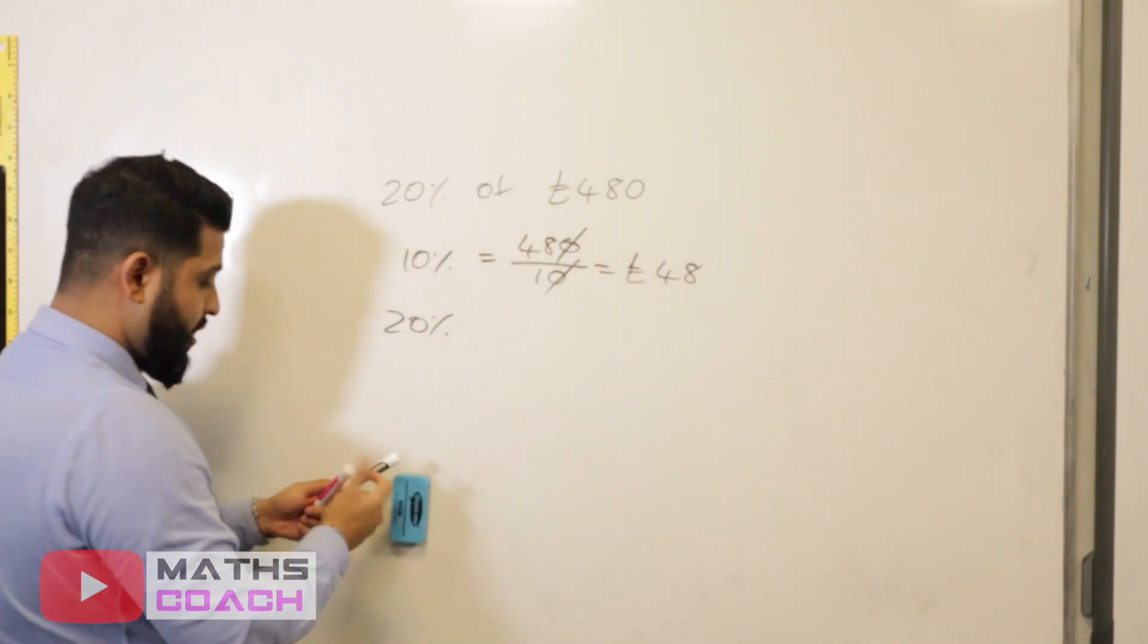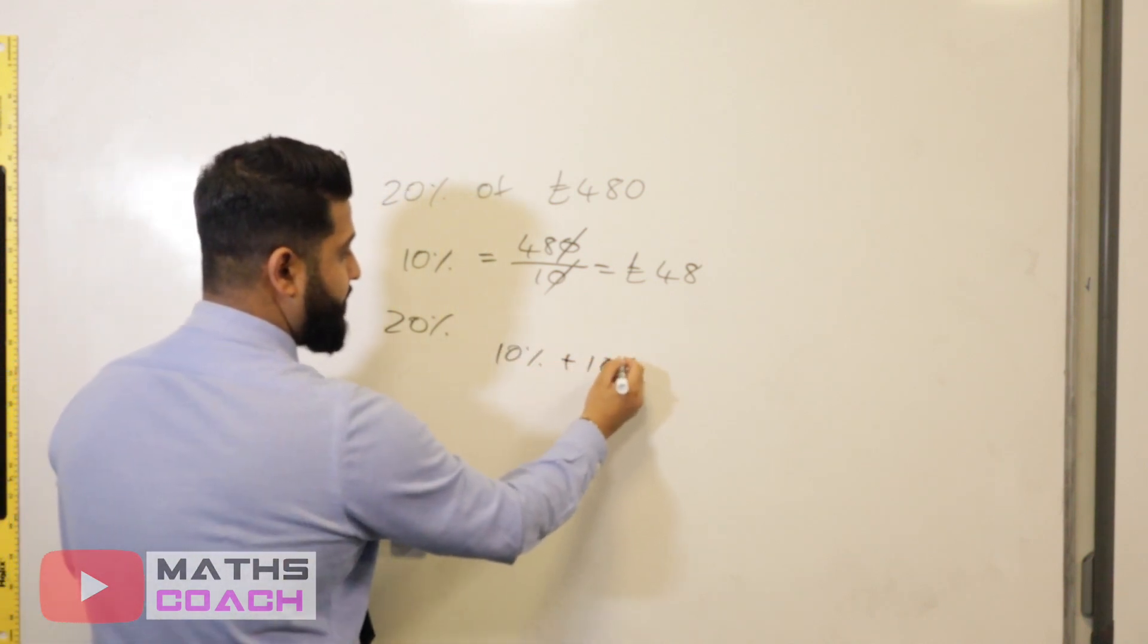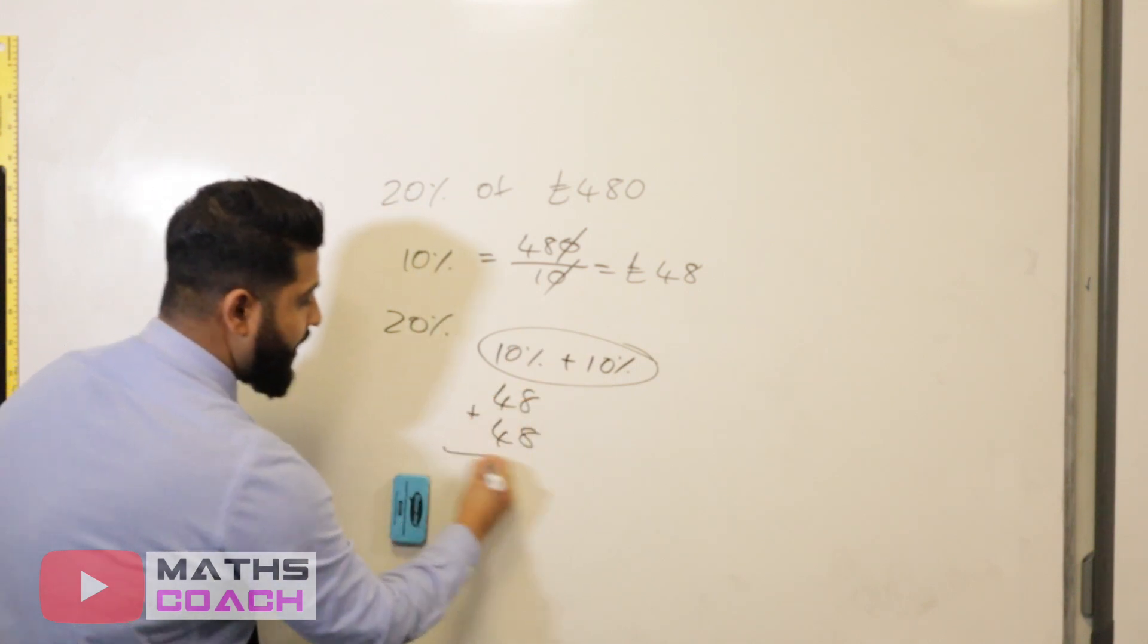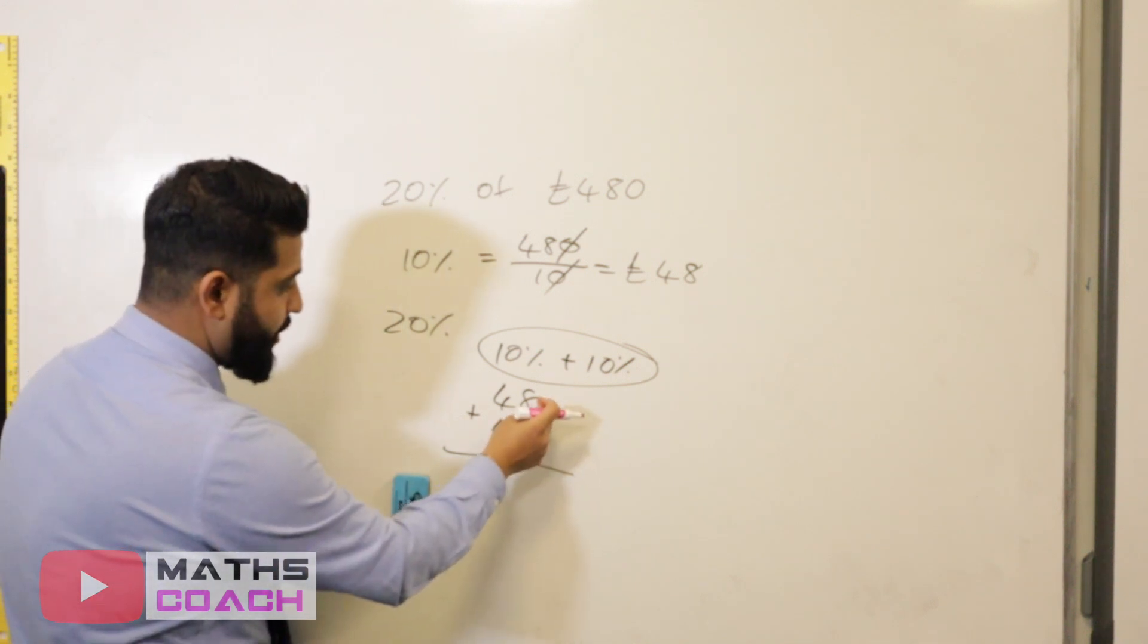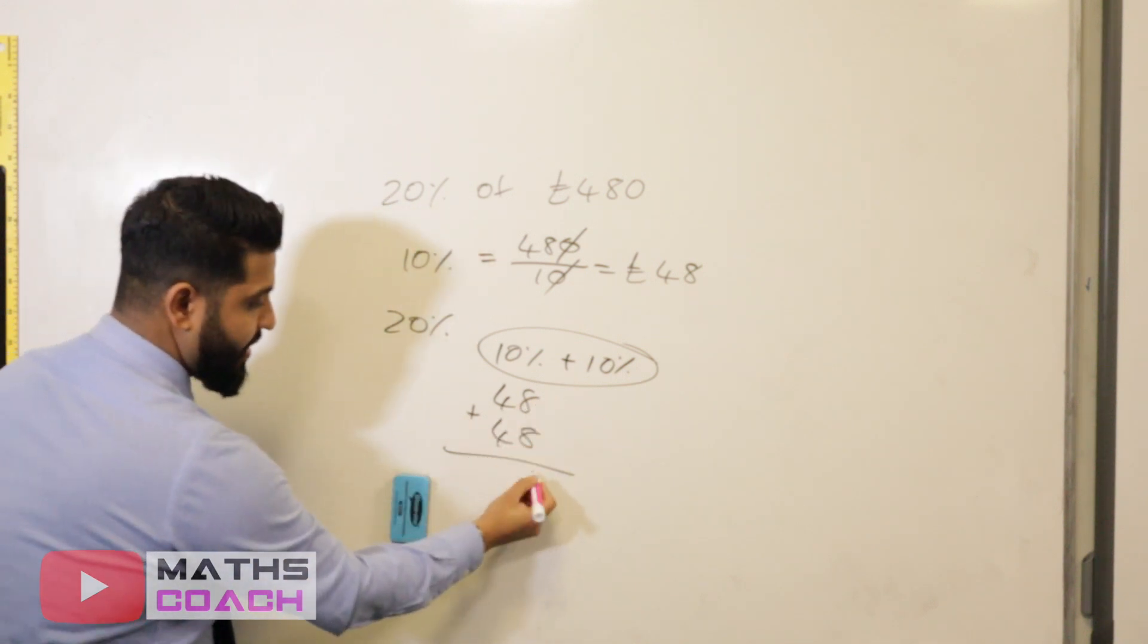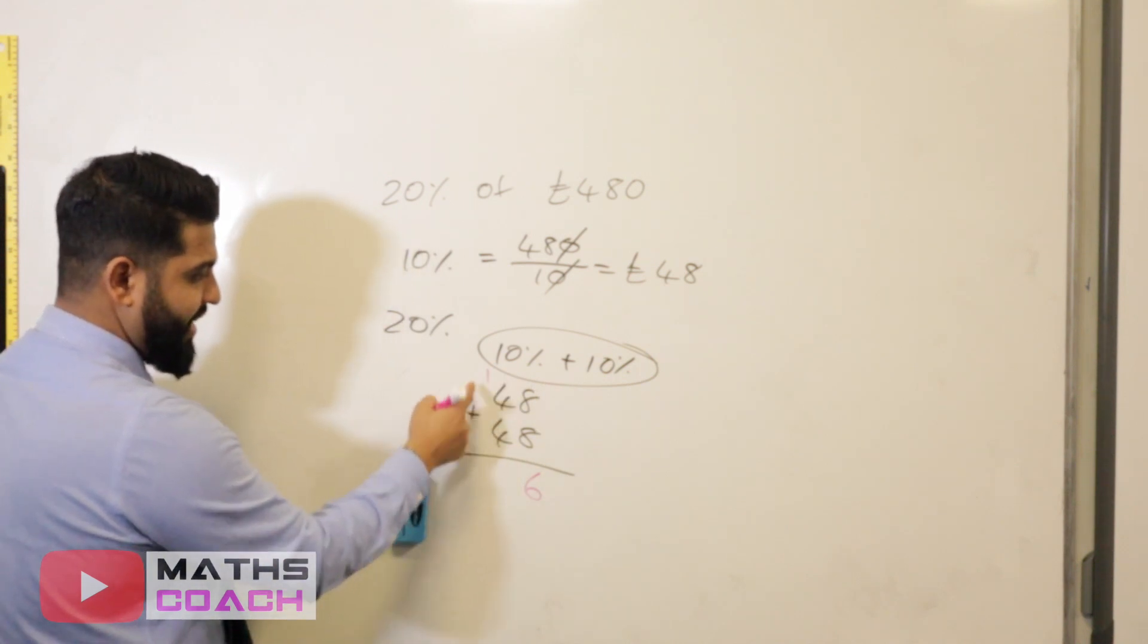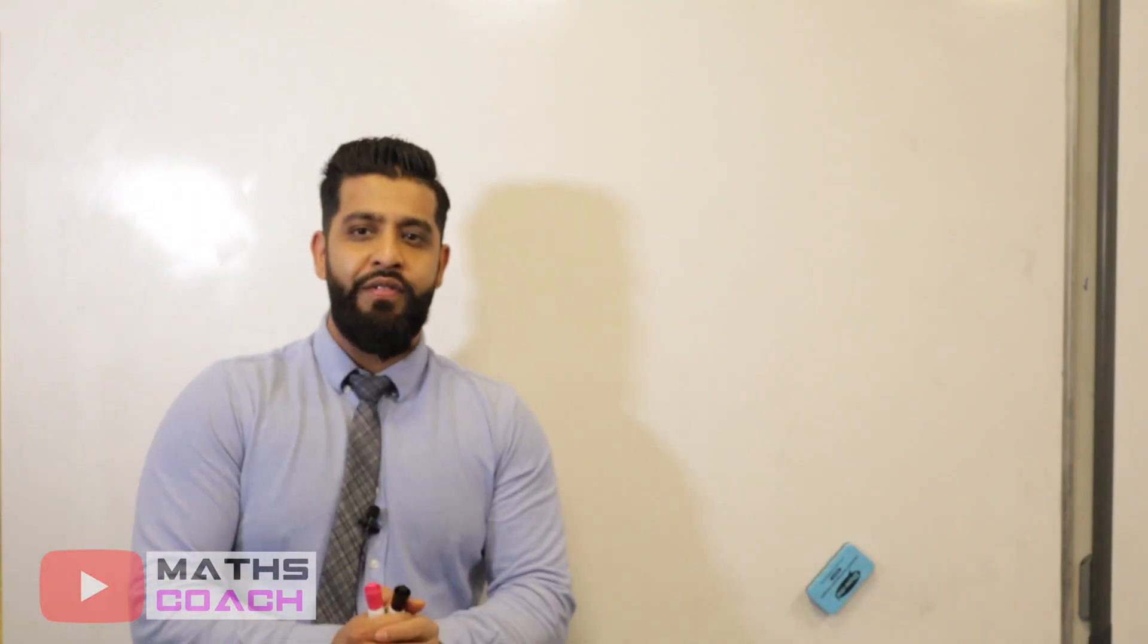So to find 20%, we are going to be adding two lots of 10% amounts. So it's going to be 48 added to 48. I'm going to show you how to do this using long addition. 8 plus 8 is 16. Carry the 1. 4 plus 4 is 8. Add the 1, which equals 96. So 96 pounds. Let's do another one.